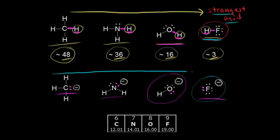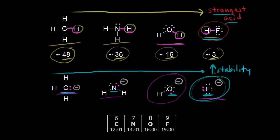So as we move to the right, we're increasing in the stability of the conjugate base. We can explain that trend by looking at the element that has the negative charge. This has a negative charge on carbon — our least stable conjugate base. Then we go to nitrogen with a negative charge — a little bit more stable. Then oxygen with a negative one charge — a little bit more stable. And finally, we get to fluorine with a negative charge — the most stable conjugate base.